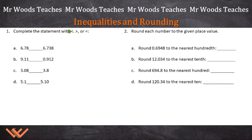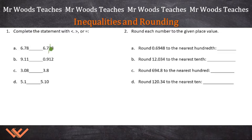Number one: complete the statement with a less than, greater than, or equals symbol. We have to put something in the middle for each one. We have 6.78 and 6.38. We have 6.7 versus 6.3, and that 8 versus that 3. So this is definitely greater — 7,800 is greater than 7,300 — so I would put the greater than symbol here.